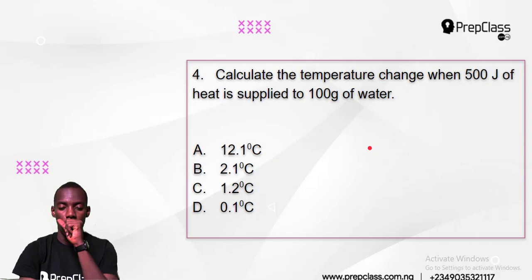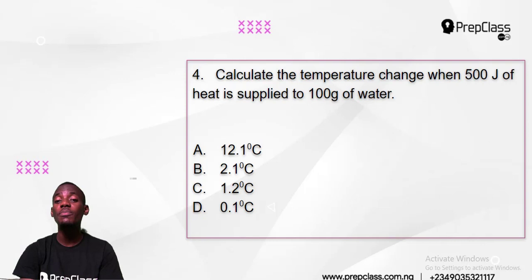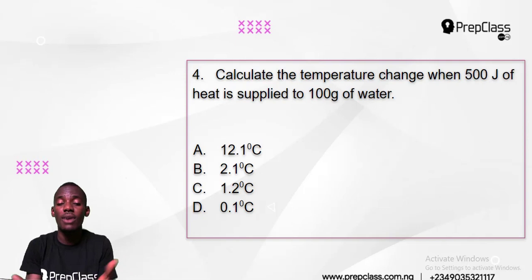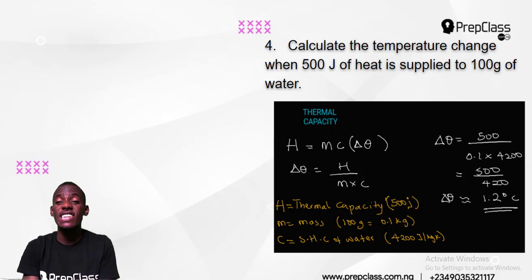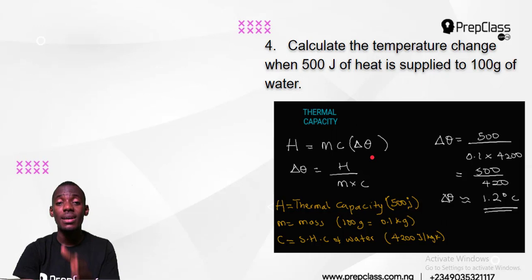Let's check out number 4: calculate the temperature change when 500 joules of heat is supplied to 100 grams of water. This is easy — super easy. The question is asking for temperature change — this is thermal physics. Many people freak out at thermal physics questions, but there is one master formula for any question on thermal capacity: H equals MC change in temperature.